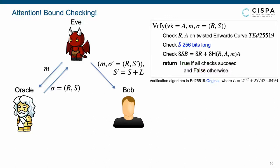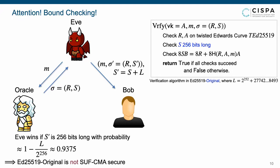Regarding strong unforgeability, the case becomes different. When querying the signing oracle on message M for signature R, S, the adversary can forge a new signature upon the same message M by replacing S by S' which equals S plus L. It's straightforward that the first and third checks are passed because the points R and A both are honestly generated, and the base point B has order L. Then, the adversary wins if S' is 256 bits long, which occurs with non-negligible probability, and indicates that Ed25519 original is not strong unforgeable.